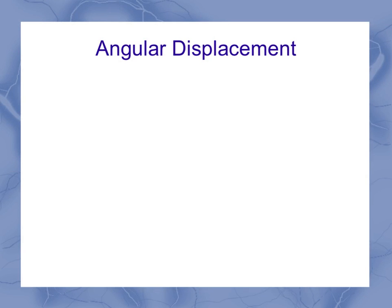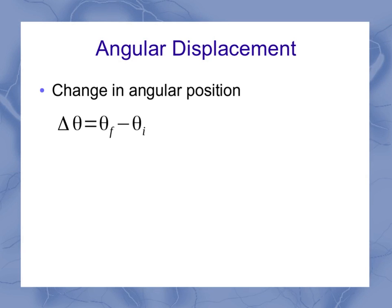Angular displacement is a change in angular position. Like any of our changes, we can use our delta notation. Delta theta (Δθ) is the change in angular position, and it's the difference between the final and the initial positions.